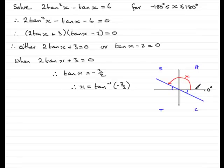Starting again from 0: turning through to the other blue line would pass the 180 degree barrier, so instead turn in the negative direction to that line — that's a turn of less than minus 180 degrees, remembering all the way around is minus 180 degrees. So that's another possible value of x. We've got two possible values of x for this solution.